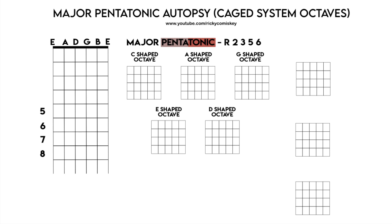What we're going to look at is the scale formula, the chords that it goes over, then we're going to build the major pentatonic scale shape using the CAGED octaves. This is a really useful way of understanding it because the CAGED octaves will have the same emotional property over the chord of the moment. If you don't know what the chord of the moment is, I will put a link to that video in the end card.